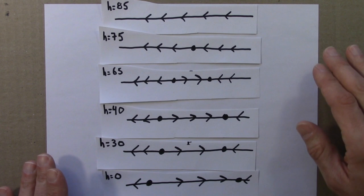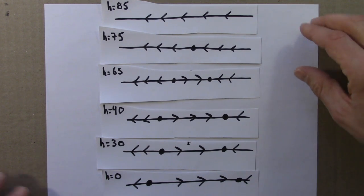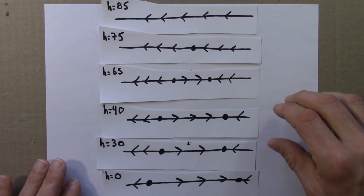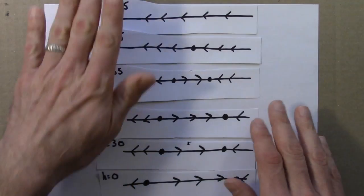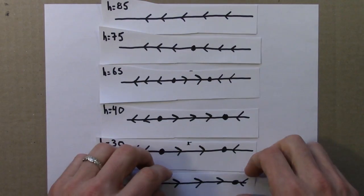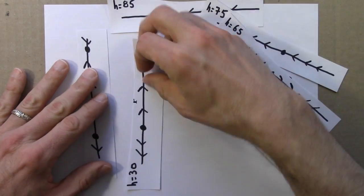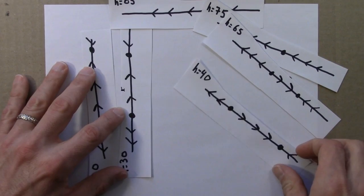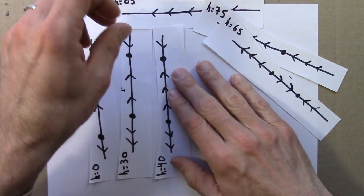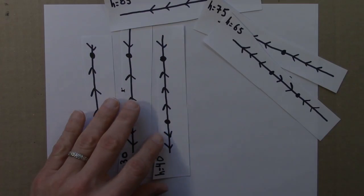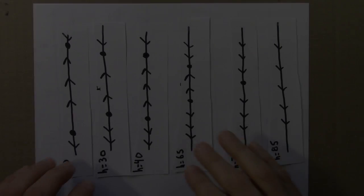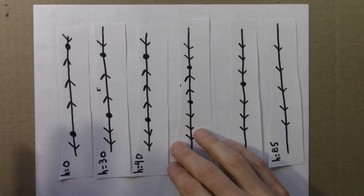So this is one way of viewing what happens for different parameter values, different h values. And it's traditional though to orient this differently. So typically, instead of having it like this, we kind of rotate it like this.